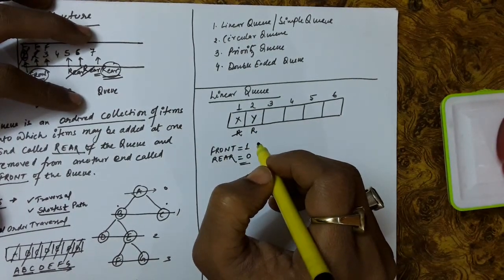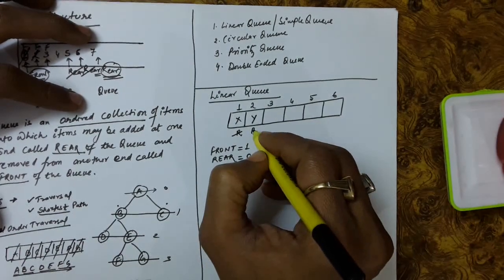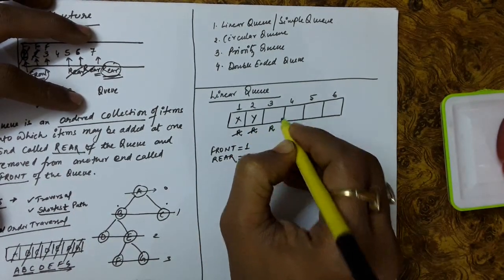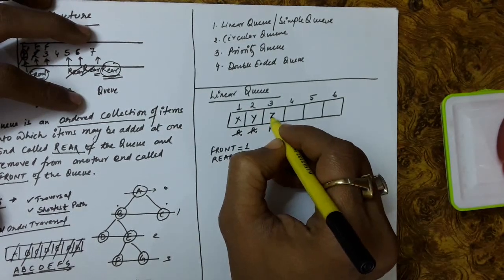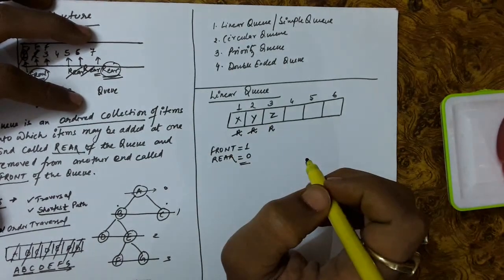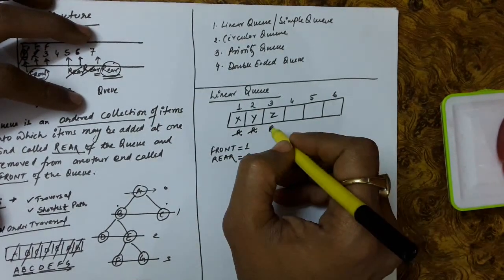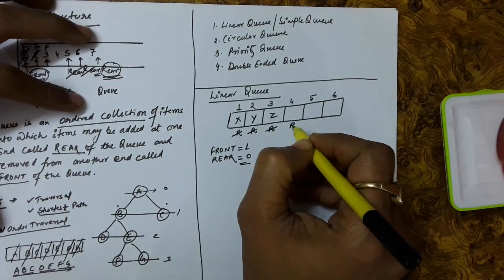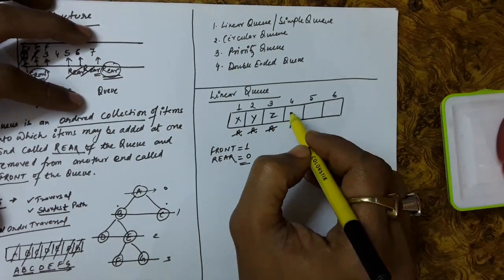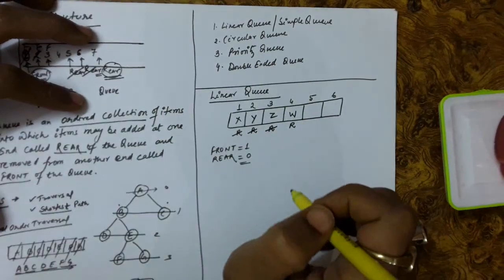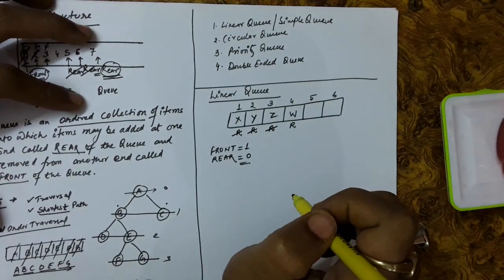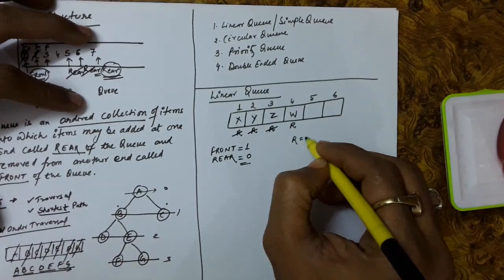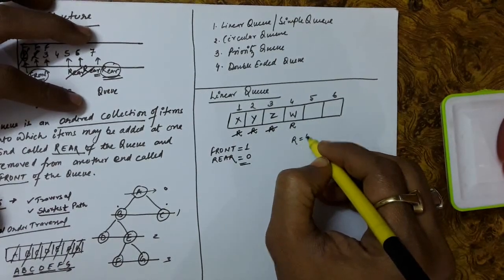After inserting x, let us insert another item y — rear is updated to position 2. Then let us insert item w — rear is updated to position 3. We insert another element and rear is now at position 4.